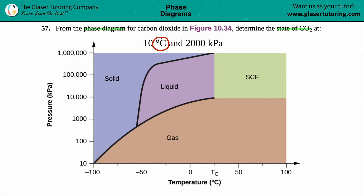They gave us the corresponding units — Celsius and kilopascals. So the 10 is the x-axis value and the 2,000 is the y-axis value. We have a point, if we think about it as that: it would be (10, 2000). Now we just have to locate that point on the diagram.